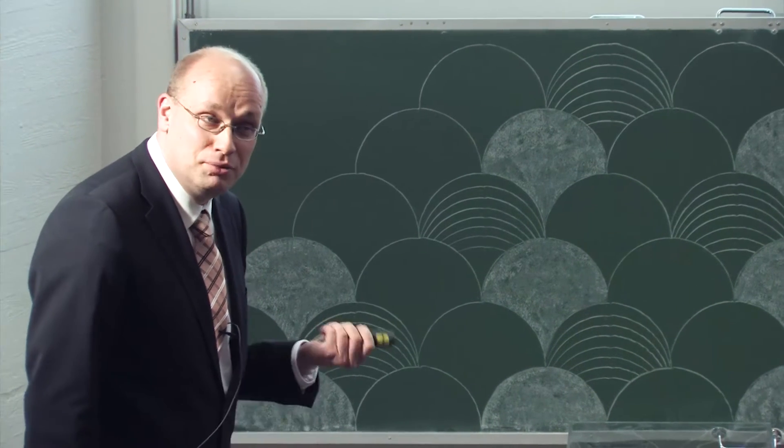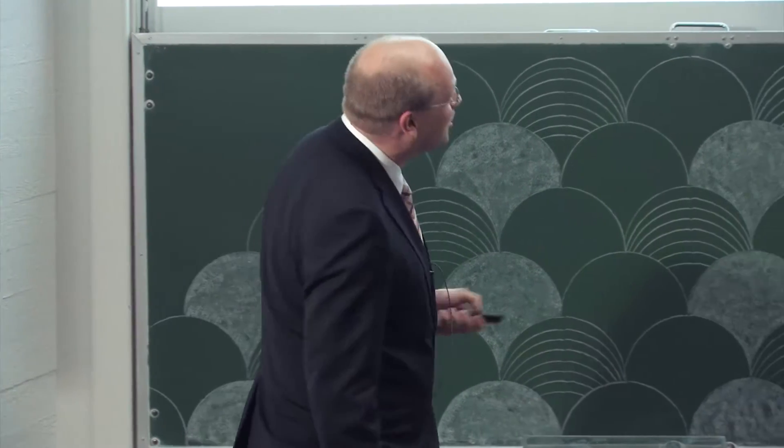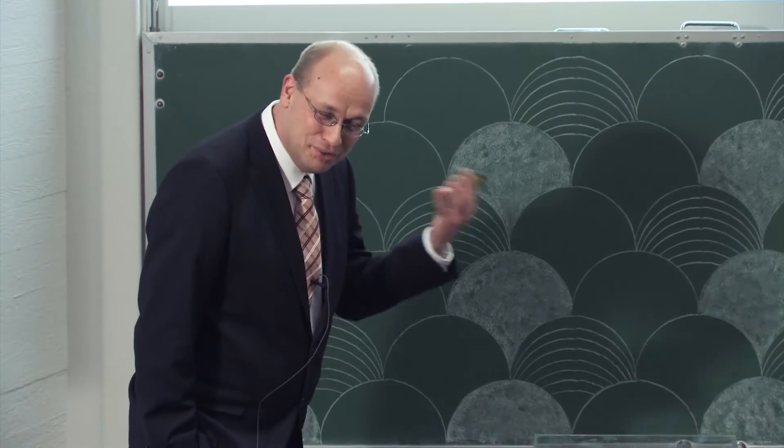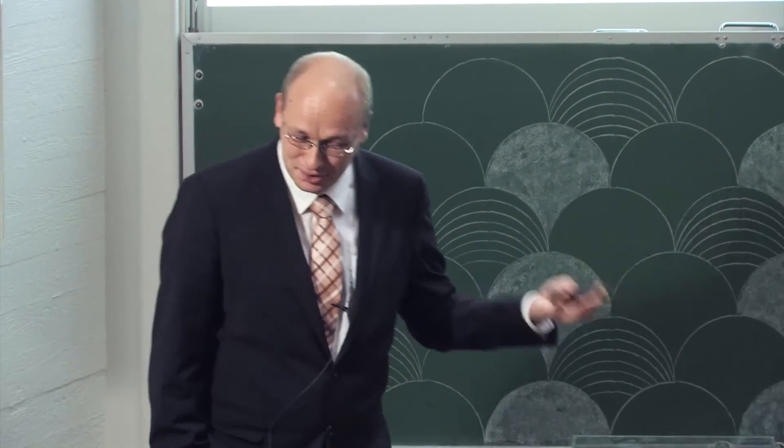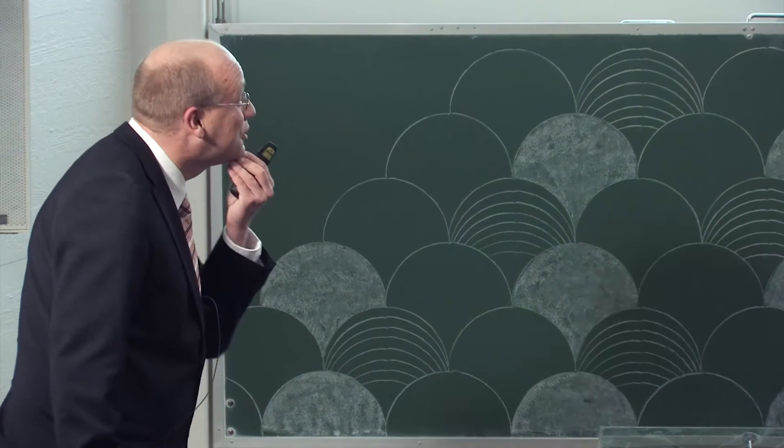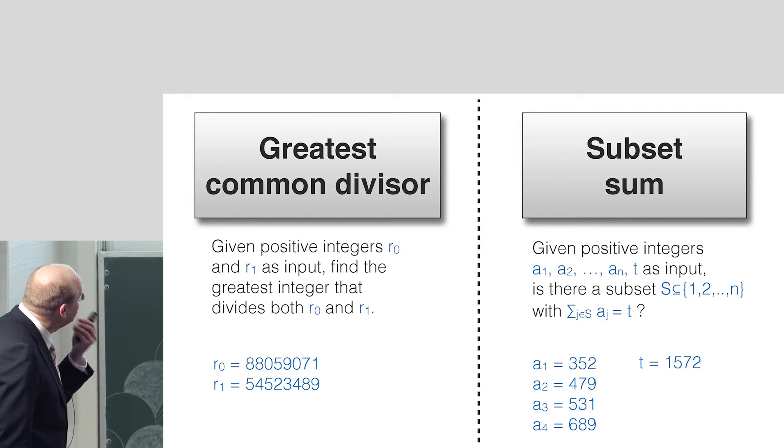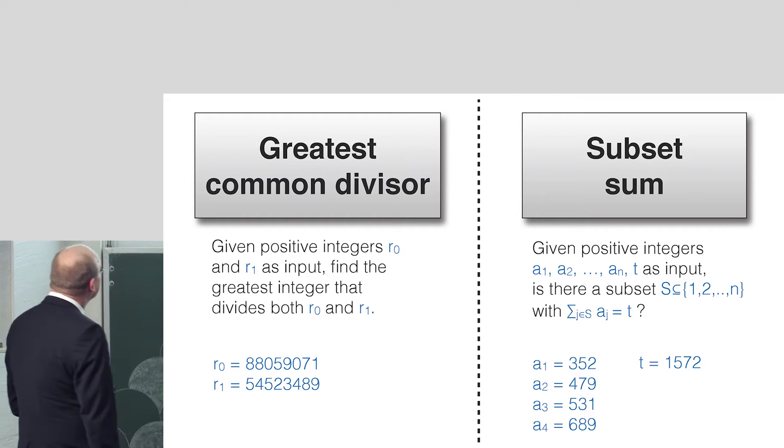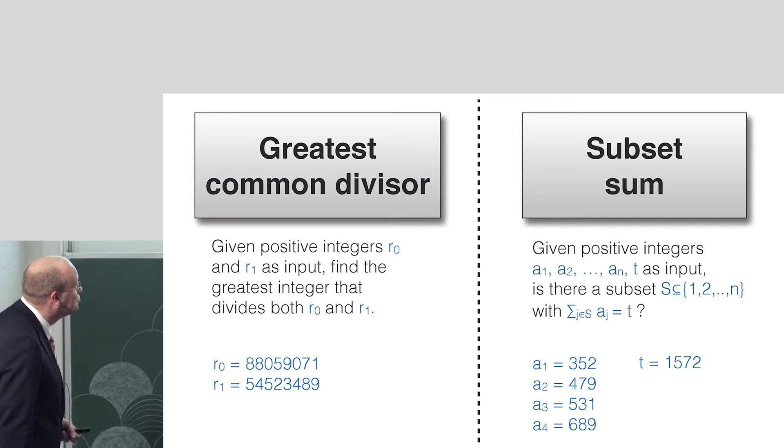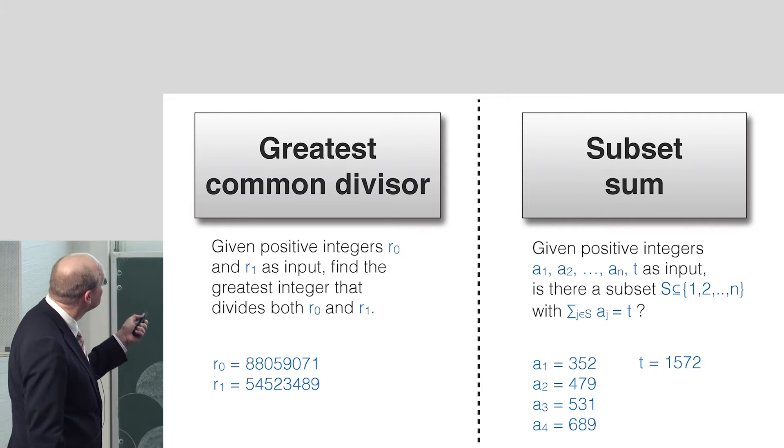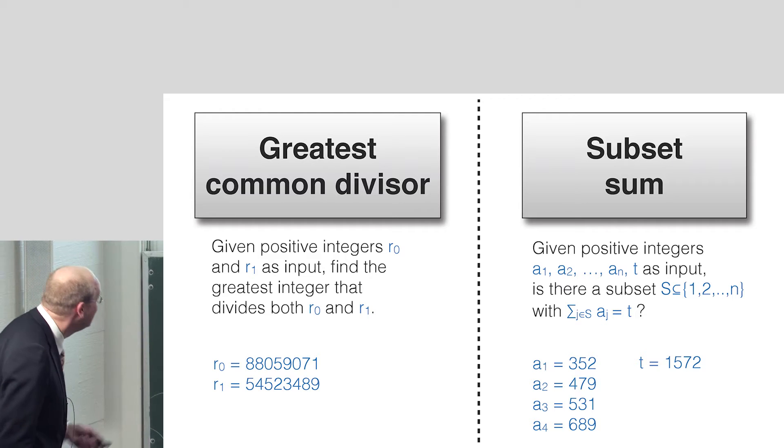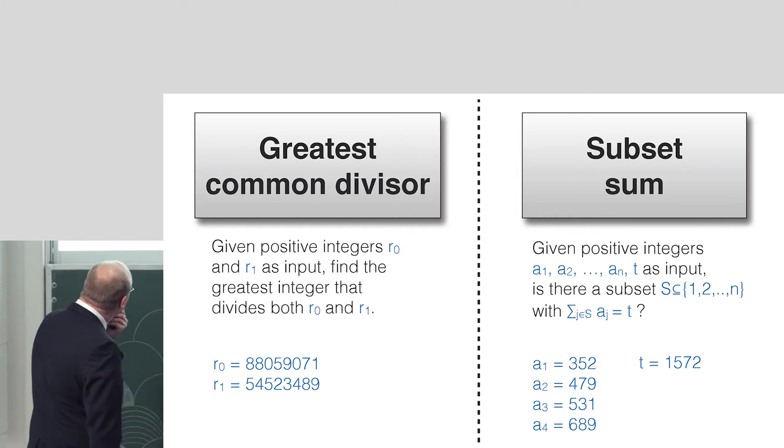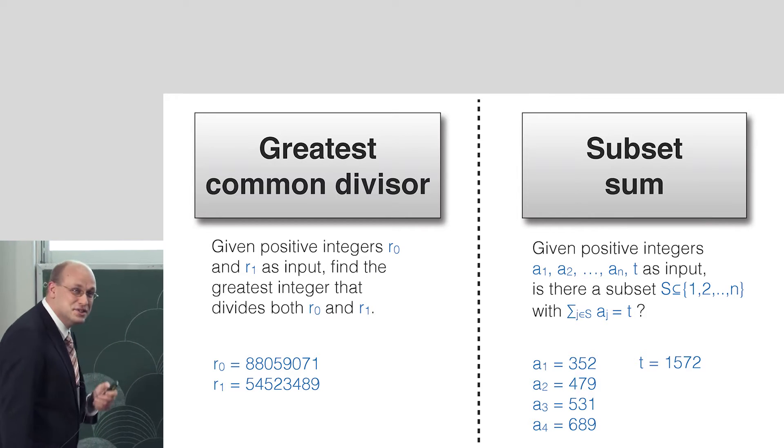I thought that we might want to look at two rather innocent-looking and maybe simple, some of them extremely classical, computational problems, just to motivate you to the sort of task what an algorithm designer faces. So here are two problem settings. Both of them involving integers. On the left-hand side, we have a classical task, the greatest common divisor. Given two positive integers, r0 and r1, here we have two eight-digit integers.